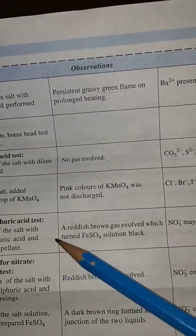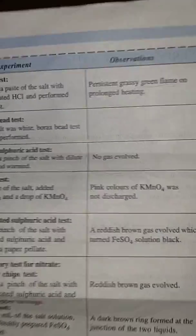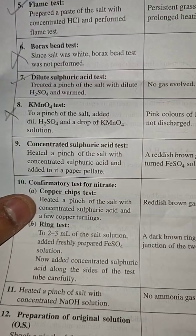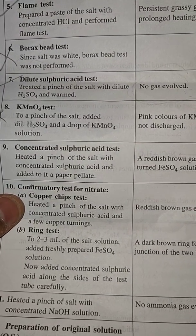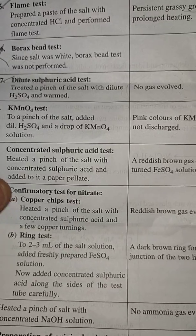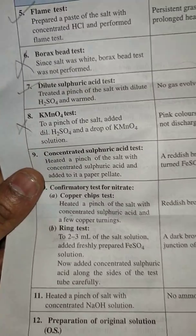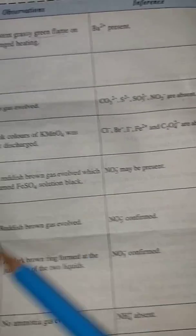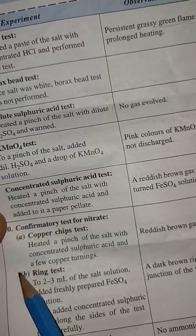Confirmatory test for nitrate is copper chip test: heat a pinch of the salt with concentrated sulfuric acid and a few copper turnings. A reddish brown gas evolved, which means NO3⁻ confirmed. This test is very important.